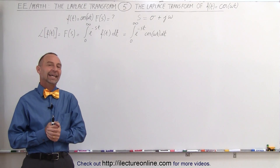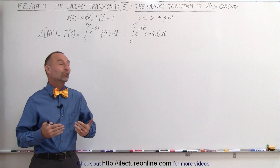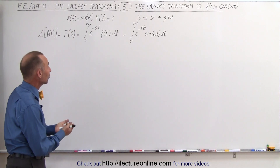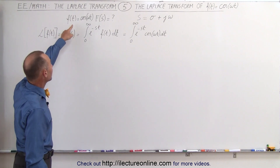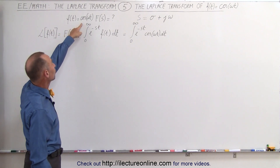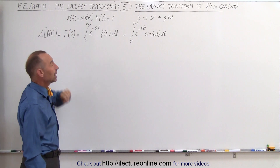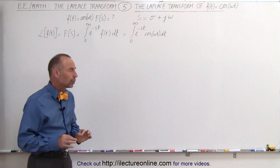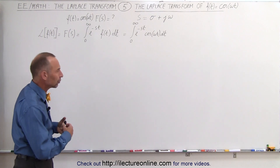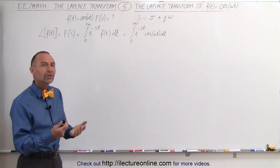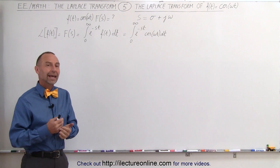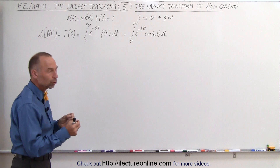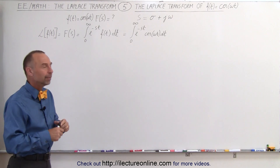Welcome to ElectronLine. In this video we're going to show you how to find the Laplace transform of the function f(t) equals the cosine of ωt. There are actually two different ways to do that. Here we'll show you one of the two ways, and on the next video when we do it with the sine of ωt we'll show you the other method.